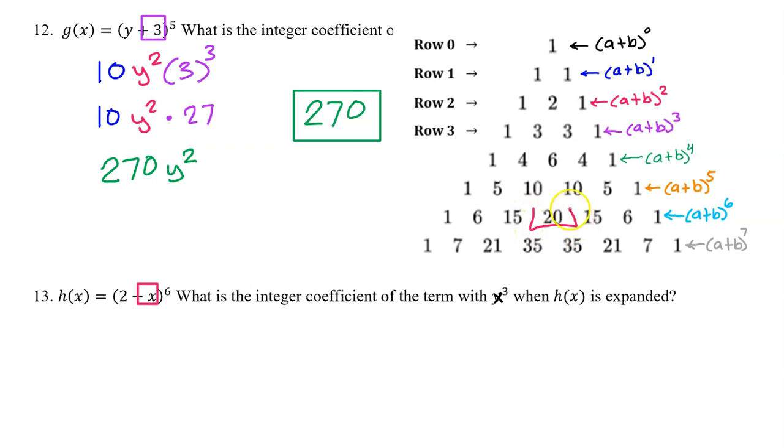So this is going to be the correct coefficient that goes with x^3. So I am bringing down the coefficient of 20. Be careful because this is really negative x.